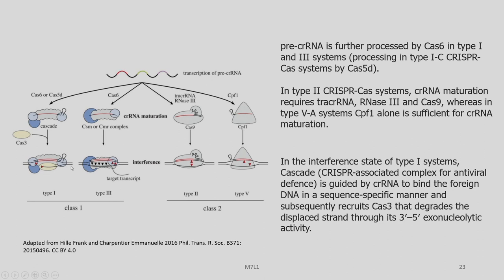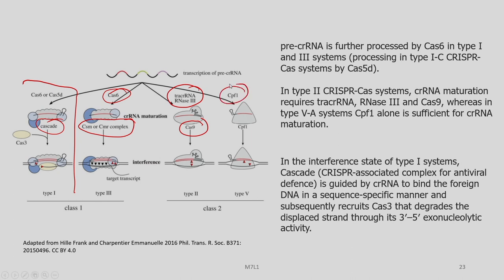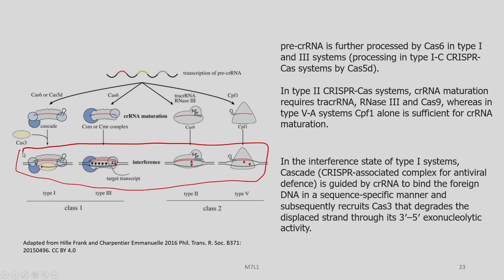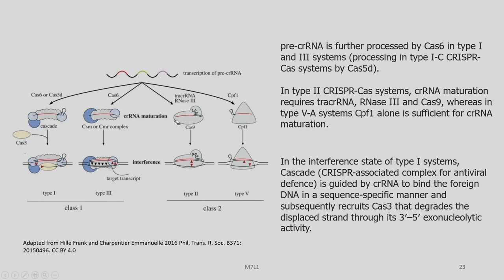Under class 1, we have types 1 and 3; under class 2, types 2 and 4. The pre-crRNA is handled in different ways by different proteins in these different classes and types. For example, in class 1 type 1, the role of Cas6, Cas5D, or cascade is involved. In type 3, Cas6 plays a role and involves the CSM or CMR complex. In class 2 type 2, tracrRNA, RNase III, and Cas9 are involved, and in type 5 the CPF1 protein is used, with interference mechanisms varying accordingly.